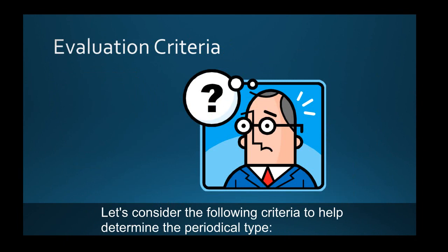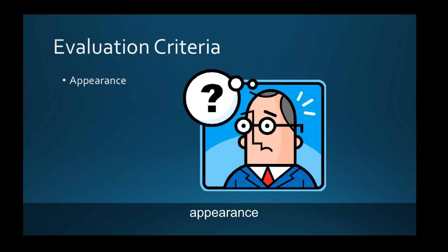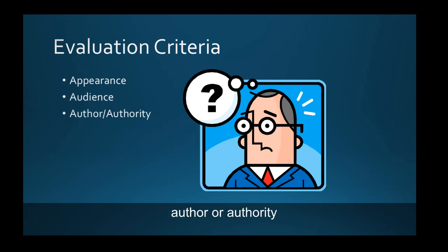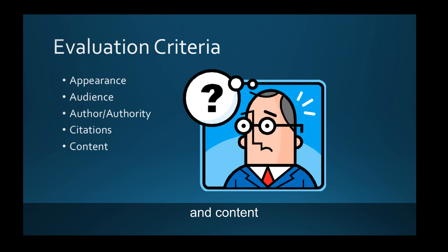Learning to distinguish between the different periodical types is an important part of evaluating and selecting your resources when doing research. Let's consider the following criteria to help determine the periodical type: appearance, audience, author or authority, citations, and content.